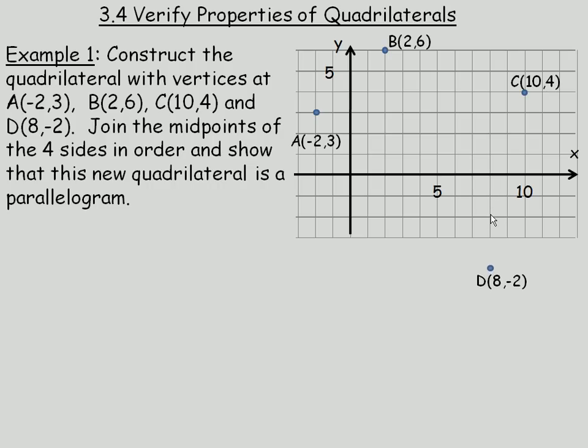Once you have the 4 points plotted, join them in order, drawing the 4 sides. Notice that we are not joining every vertice to every other vertice because then we would also include the diagonals. We don't need these diagonals here, just the outsides of the quadrilateral.